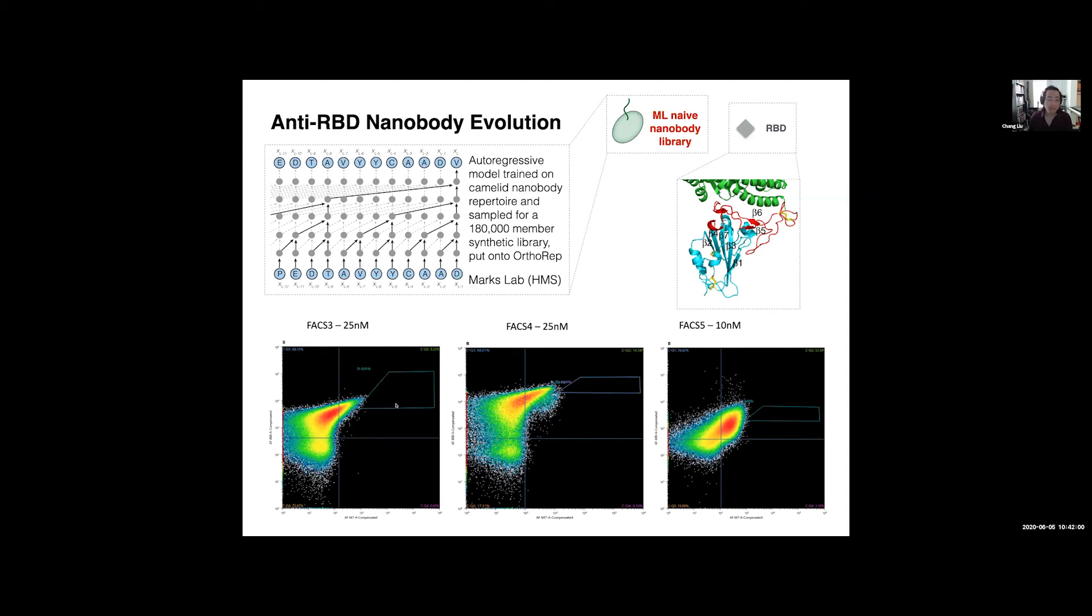So this is very small as libraries go, but we wanted to see that this computationally designed library could already give you weak binders. This was done in collaboration with Debbie Marks' lab at Harvard Med School. And what we find is that after a couple of sorts, so we're already at FACS 3 here, we get binders, and those binders are improving after more sorts.